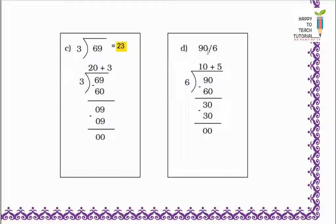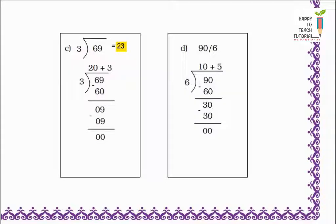Next example: 90 divided by 6 — we have to share 90 rupees among 6 people. I start by giving 10 rupees to each. 6 tens are 60. 90 minus 60 equals 30. Still I have to distribute 30 rupees among 6 people. That means I give 5 rupees more to each. 6 fives are 30. 30 minus 30 equals 0, remainder is 0. I distributed all the money equally among 6 people. Each one gets 10 plus 5 equals 15 rupees.